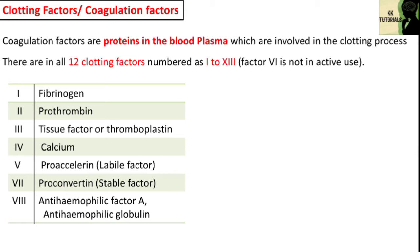Factor number 4 is calcium. It is derived from absorption from bones and gastrointestinal tract absorption. It is the most important ion involved in almost all of the reactions in both the intrinsic and extrinsic pathways. Factor number 5 is the labile factor, also called proaccelerine, and its sources are platelets and the liver. Factor number 6 is not in active use.